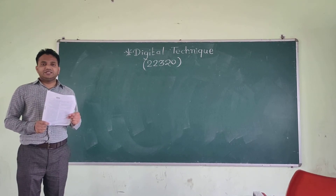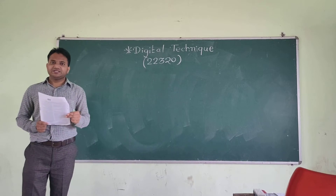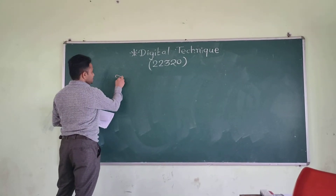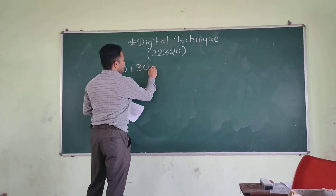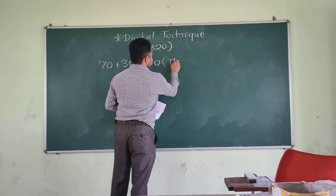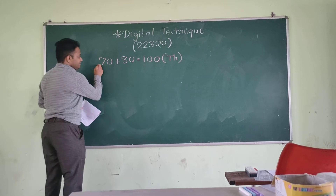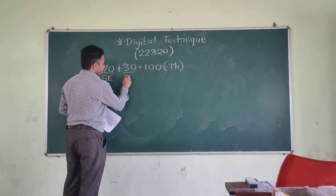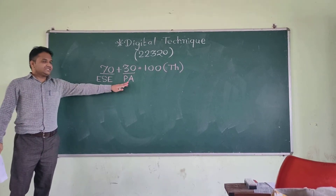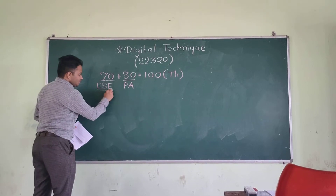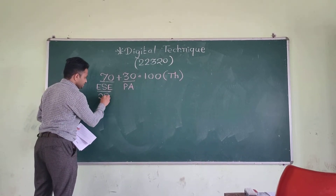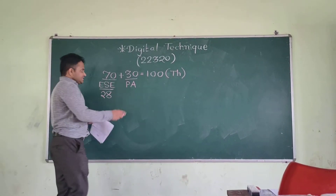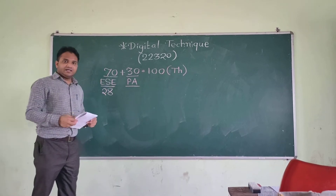So this is why Digital Technique is included in your syllabus. This particular subject has a weightage of 70 plus 30 equal to 100 for theory. So 100 marks is for the theory — 70 marks is for the end semester examination and 30 marks is for the practical assessment, also called progressive assessment. Out of 70, you must obtain 28 marks for passing.